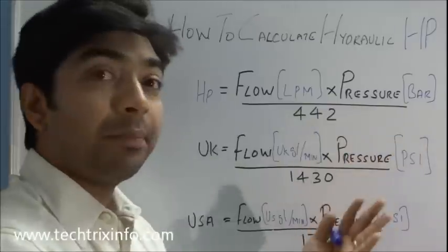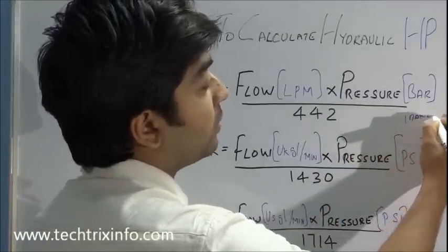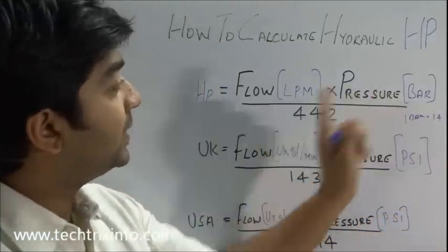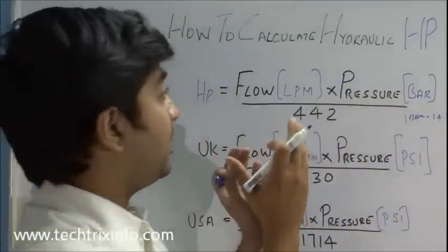One bar equals 14.5 PSI. So that's the unit. And let's calculate a sample or an example of how hydraulic HP can be calculated with this formula.